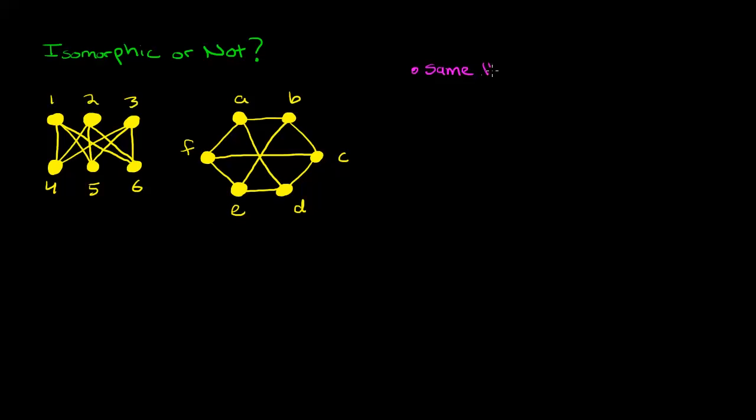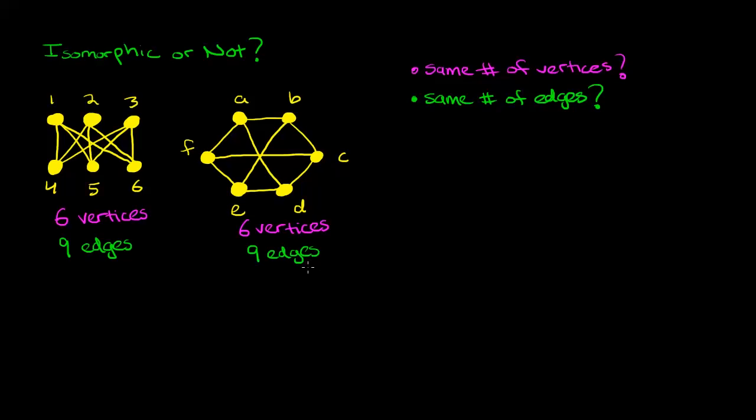The first check would be to see that they have the same number of vertices. Obviously if you're trying to map the vertices of one graph to the vertices of the other and you want to do this with a bijection, they need to have the same number of vertices. Next you'll want to check if they have the same number of edges. That's because to be isomorphic, you need to also preserve adjacency and non-adjacency, so you must have the same number of edges. If you count up the edges in the first graph, you'll see it has 9. If you count up the edges in the second graph, you'll see it also has 9.